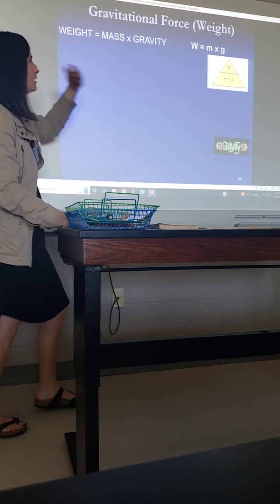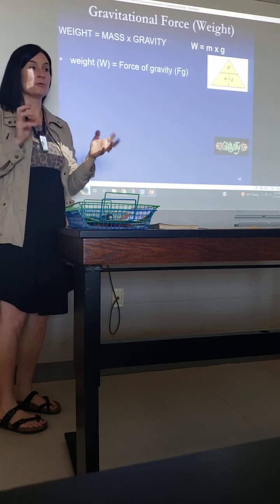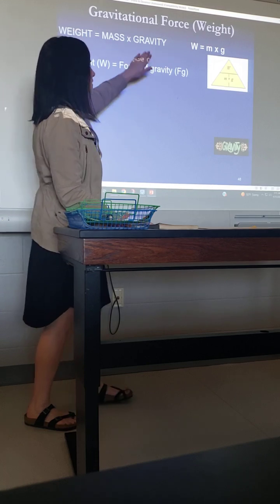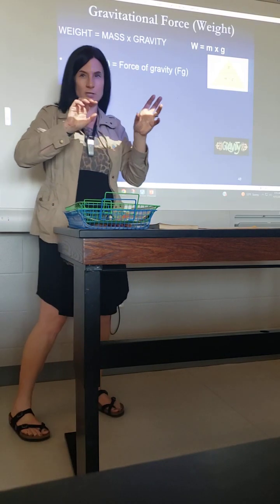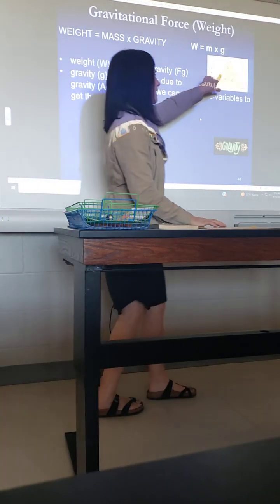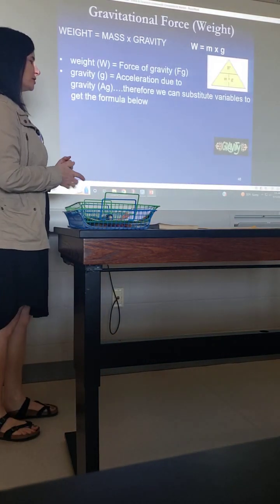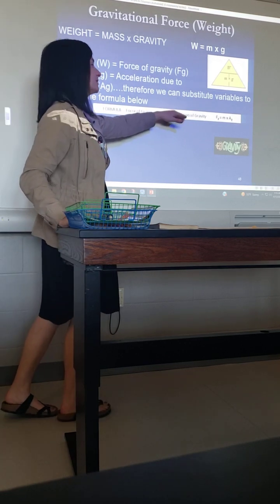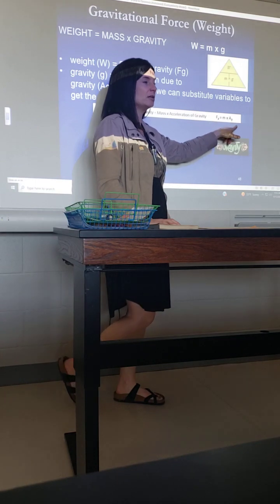And so here's our second equation. Weight equals mass basically times gravity, which is the acceleration due to gravity. So the only thing that makes this tricky is that there's a lot of different abbreviations. So force of gravity can be substituted for weight. Gravity can be substituted for acceleration due to gravity. So there's just a lot of substitutions, and so sometimes that gets confusing. But just know that weight is our force, mass is still mass, and gravity is our acceleration.